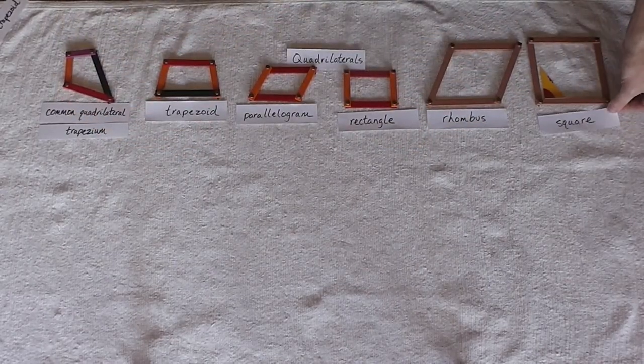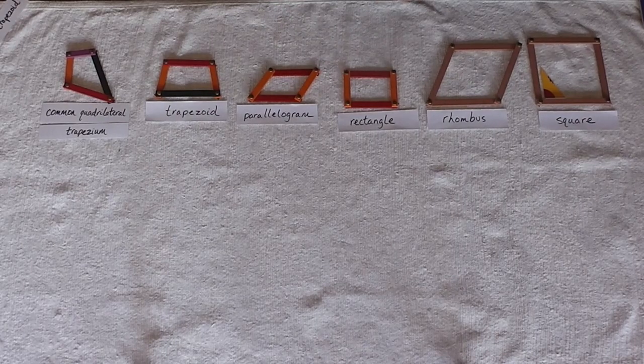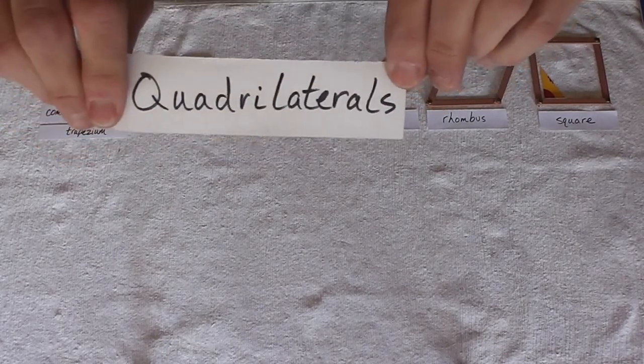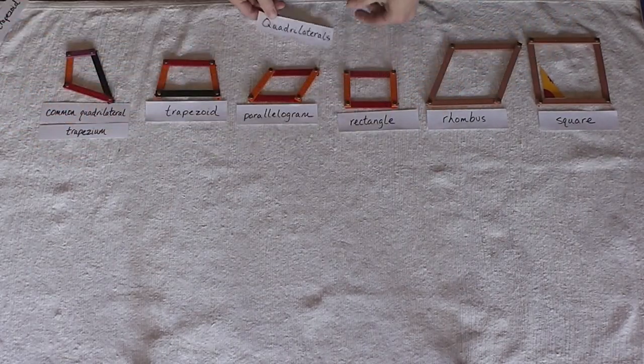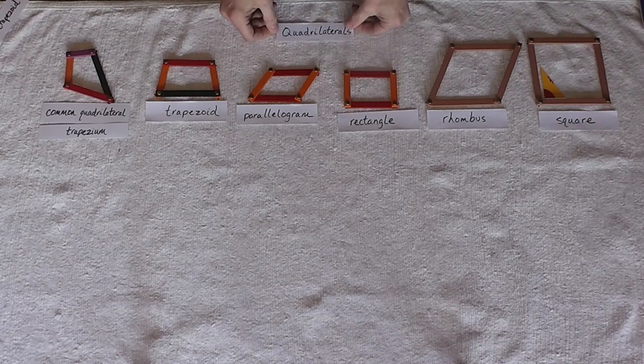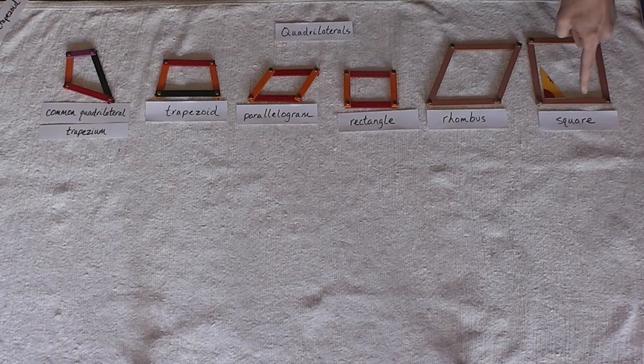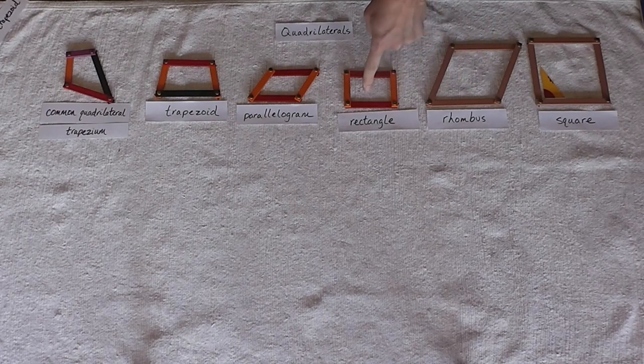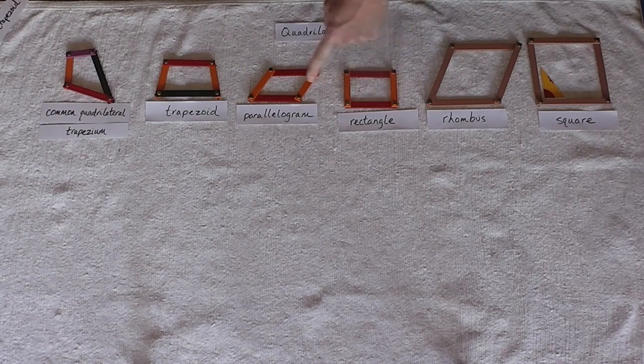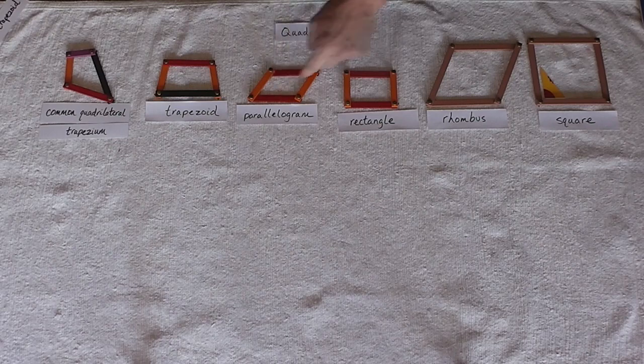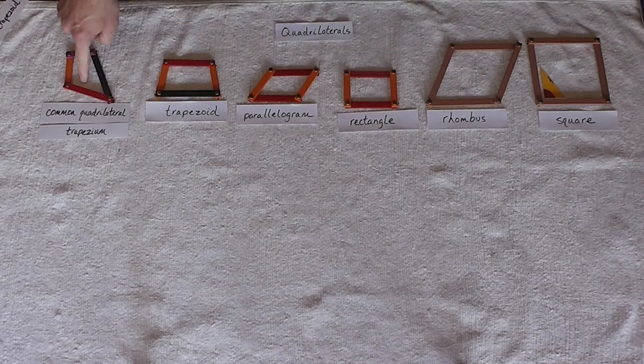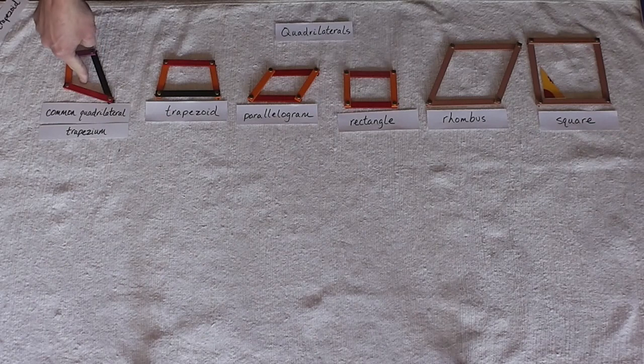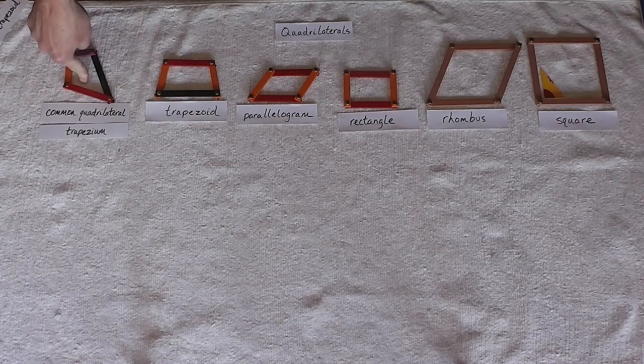So, these are quadrilaterals. Quad, meaning four. Lateral, meaning side. Four sides. Quadrilateral, four-sided figures. We have a square, a rhombus, a rectangle, a parallelogram, a trapezoid, and a common quadrilateral or a trapezium.